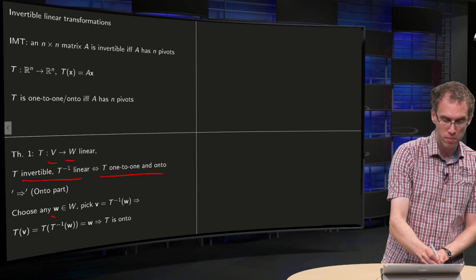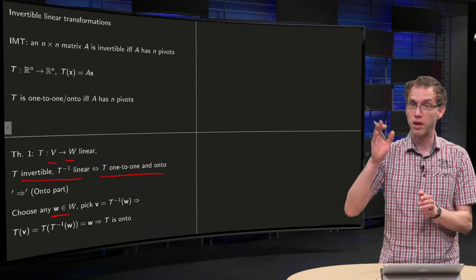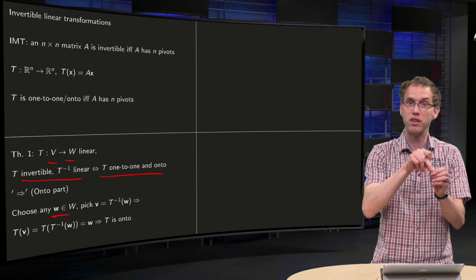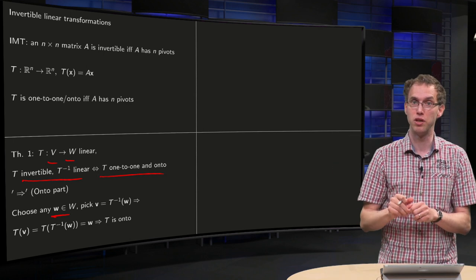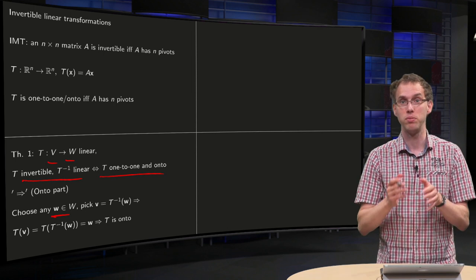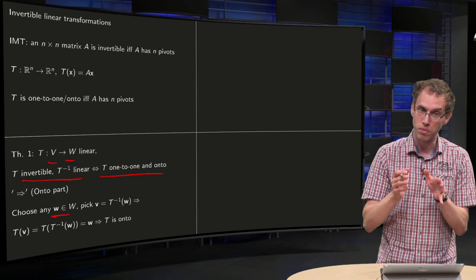Well, pick some w into your codomain and we have to show that point v in the domain exists such that T(v) equals this w. Well, how do we find this v? Well, we use the inverse because we know the inverse exists, that's an assumption.